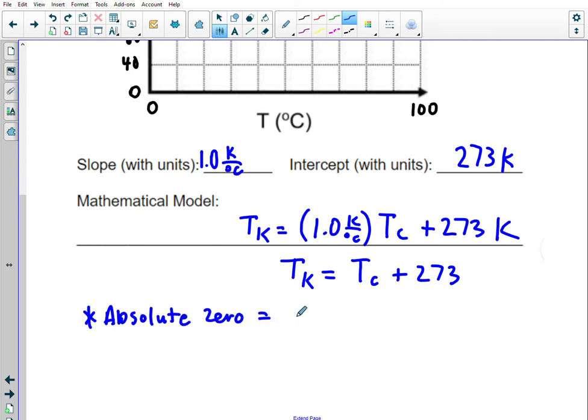That might be something good to note on your sheet: absolute zero equals zero Kelvin, equals negative 273 degrees Celsius. And so again, because the slope is one, if we go forward to zero Celsius we're going to be at positive 273 Kelvin.